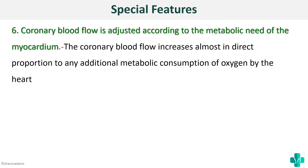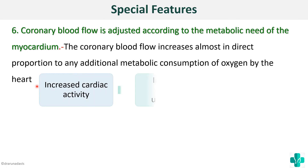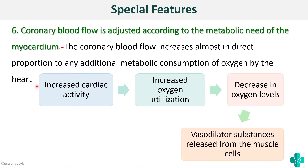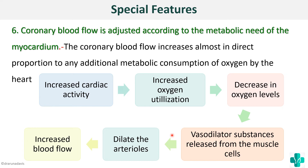Another special feature is that coronary blood flow can adjust itself according to the metabolic needs of the myocardium. During exercise or increased cardiac activity, coronary blood flow increases almost in direct proportion to any additional oxygen consumption by the heart. When there is increased cardiac activity, increased oxygen utilization causes a decrease in oxygen levels, and the muscle cells release vasodilator substances like adenosine, potassium, hydrogen, and nitric oxide, which dilate arterioles and increase blood flow.